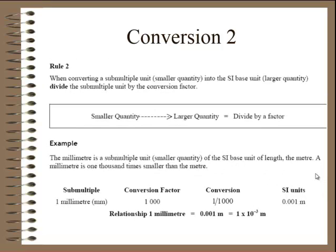Rule number two, if I'm converting a submultiple unit, something like a millimeter, into a larger SI unit, then I have to divide by the multiple. So one millimeter is a factor of a thousandth. So therefore, if I have one meter divided by a thousand, it gives me a millimeter. And that's the relationship. So those are the quick recap on units and how to make some conversions. I hope this helps.